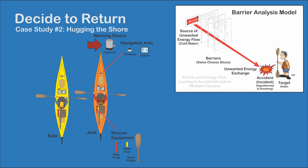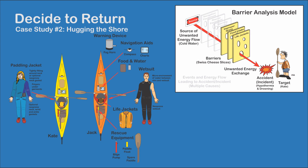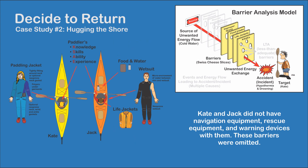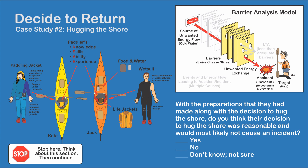By hugging the shore, they were less likely to encounter large boats and could probably get by without warning devices. Even though Cade was dressed for the air temperature, by hugging the shore she could get out of cold water reasonably quickly if she capsized. Jack fueled his engine with snack foods; Cade didn't. Wearing their life jackets kept their heads out of the water and offered some cold water protection. Complementing the lack of equipment, they had little paddling knowledge, minimum skills, beginning paddling ability, and two to three weeks of experience. Potential barriers were omitted, or those they did have had gaping holes in them. With the preparations made and the decision to hug the shore, do you think their decision was reasonable and would most likely not have caused an incident?